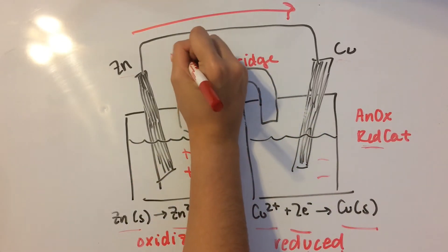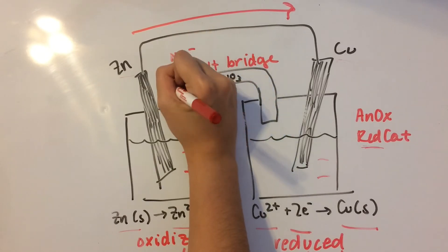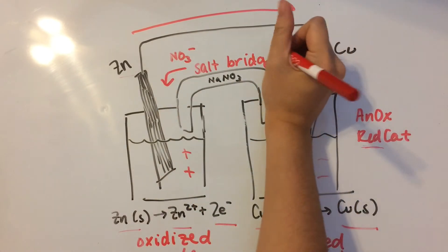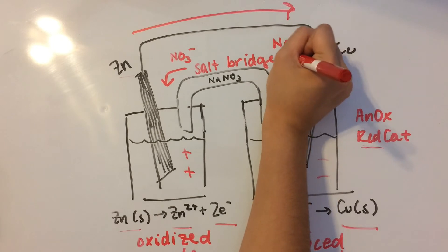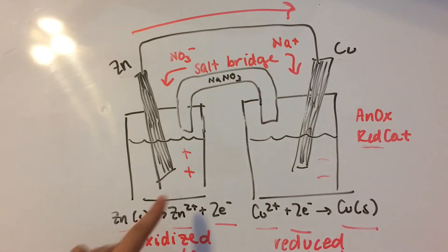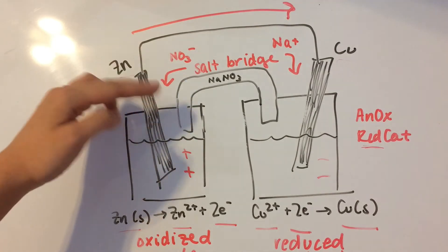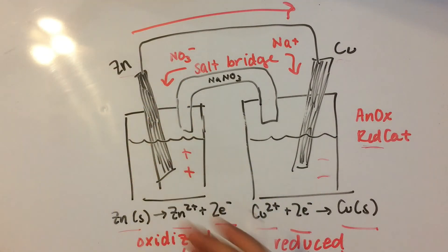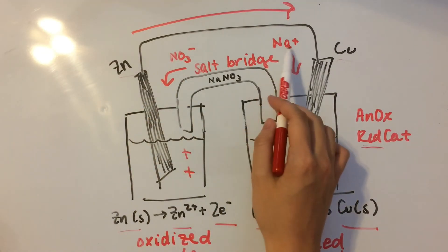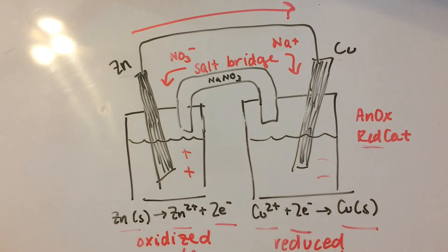So, NO3 minus is going to go to this side and Na plus is going to go over to this side because we have a positive buildup here, which means that more negative ions should move to this side. Meanwhile, positive sodium ions should move over to that side.